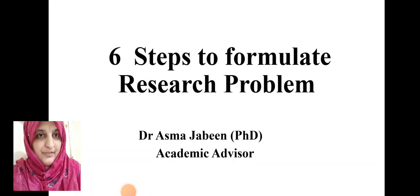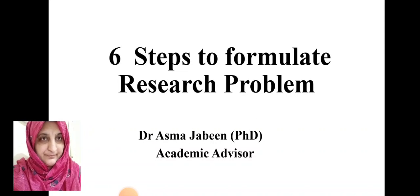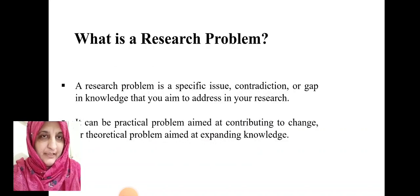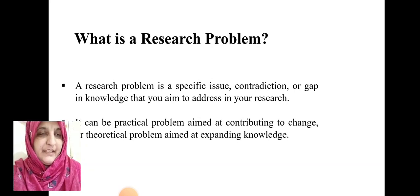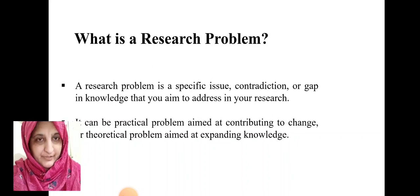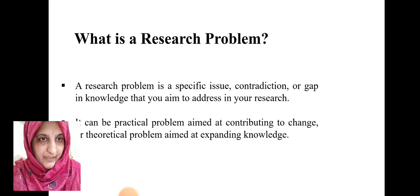Hello everyone. Our today's topic is six steps to formulate a research problem. Let's have a look at what is actually a research problem and how we can define it. A research problem is basically any specific issue, contradiction, or gap in knowledge that you aim to address in your research. Your research problem can be any practical problem aiming to contribute a change, or it can be any theoretical problem aimed at expanding knowledge.